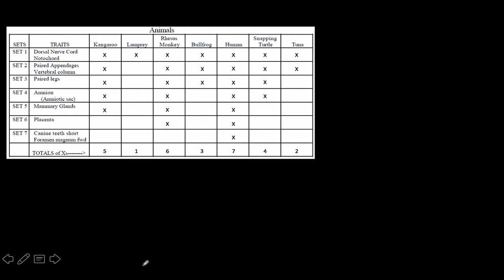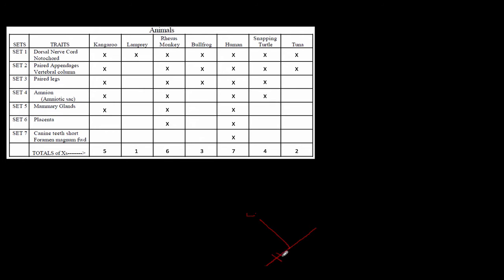So in order to do this, if we create a cladogram here, we say that all these guys share a common ancestor, and then there's a point where they branch. You can see all of them have a dorsal nerve cord and notochord here, and there's a point where they branch. This first branch leads to the lamprey. So this leads to the lamprey here, and right here at this point, this is the notochord and the dorsal hollow nerve cord that all organisms past this point are going to have.